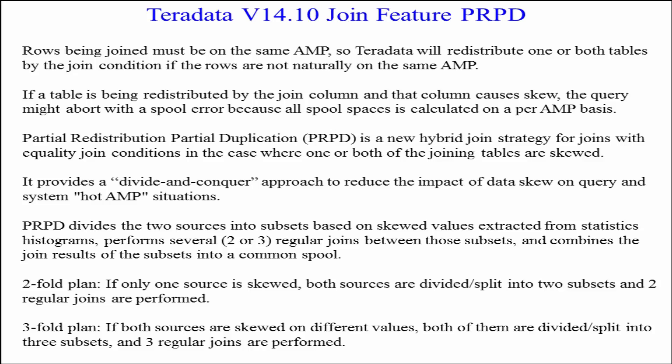Partial Redistribution Partial Duplication — PRPD — is a new hybrid join strategy for joins that have equality join conditions. In the case where one or both of the joining tables are skewed, it provides a divide-and-conquer approach to reduce the impact of data skew on query performance and system hot-AMP situations. PRPD divides the two sources into subsets based on skewed values extracted from statistics histograms.